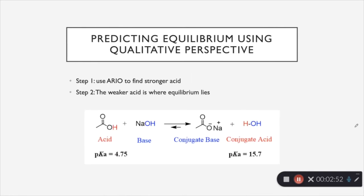So this is more of what you are going to be required to do in organic chemistry. You're going to be finding the relative acidity using ARIO. And then based off of that, you can determine where the equilibrium lies. So remember, if we're using qualitative perspective, we don't know the pKa values. So we're going to pretend that we don't know these. And this is just the same reaction that we had in the last one, but we're just going to use a different way to find it.